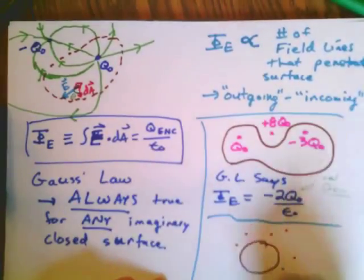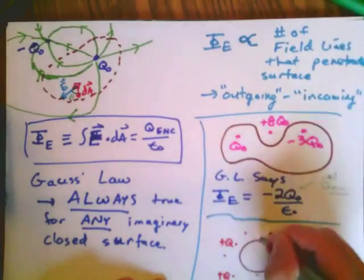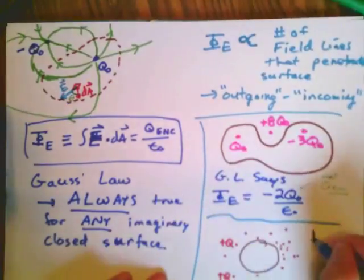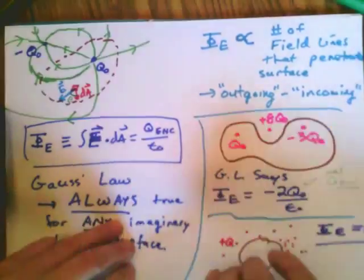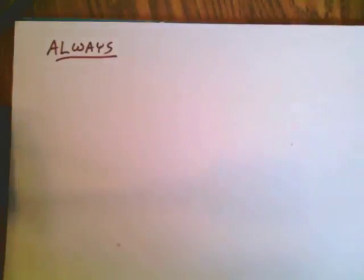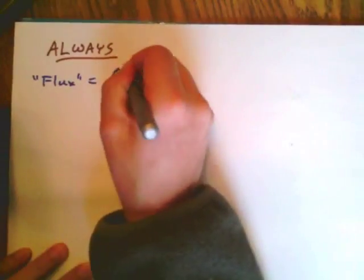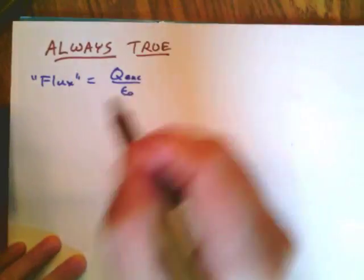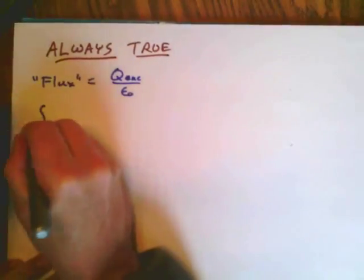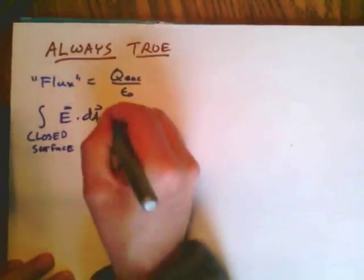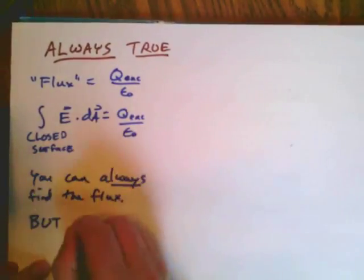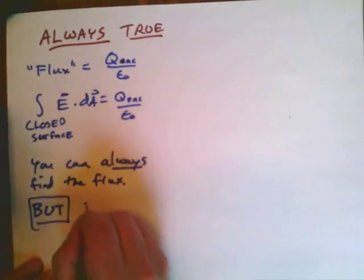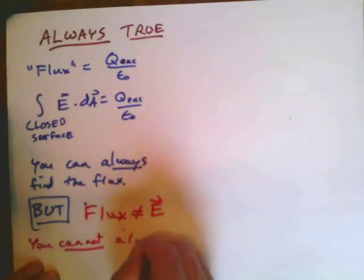For any configuration, if there's no charge inside the flux is zero — that's what Gauss's law says. It's not that the field inside is zero, but the flux is. Gauss's law is always true: the flux equals the enclosed charge divided by epsilon naught. You don't have to calculate the flux directly — just calculate the enclosed charge. But flux and field are not always the same; you can't just know the flux and expect to know the field.